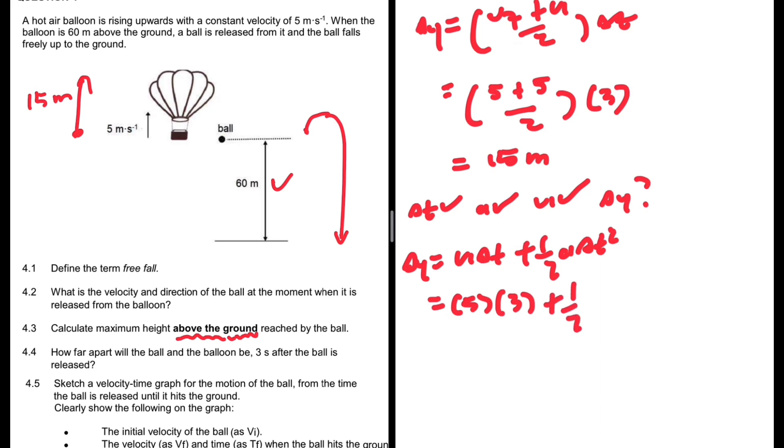Vi is 5, delta t is 3, plus half acceleration which is negative 9.8, delta t squared. When I put that in my calculator, 5 times 3 minus 4.9 times 3 squared, we get negative 29.1 meters. The displacement of the ball is downwards, 29.1 meters.